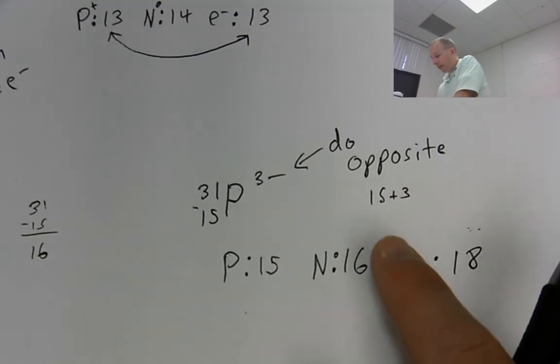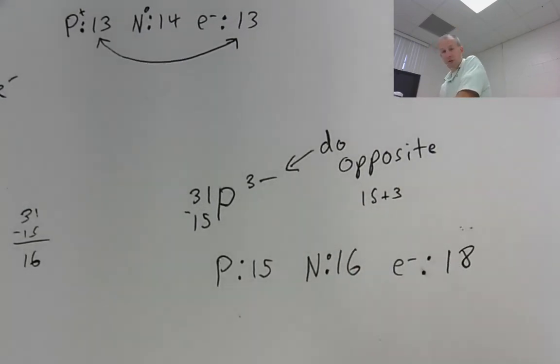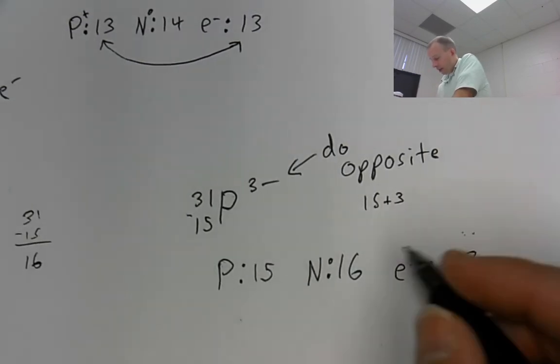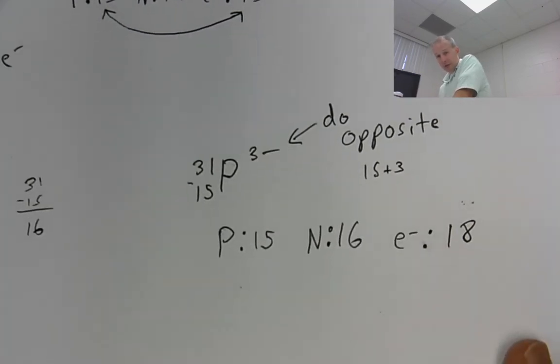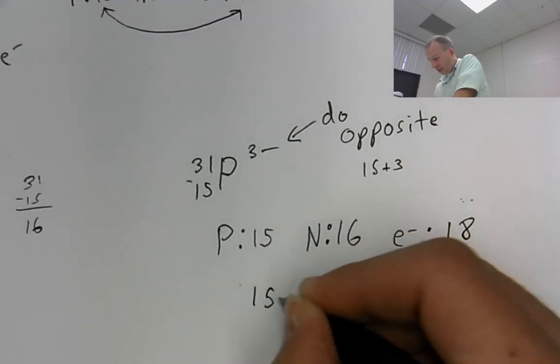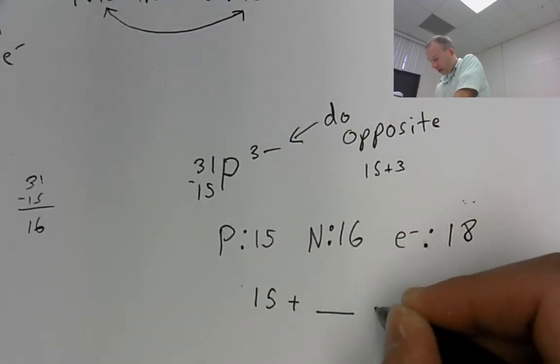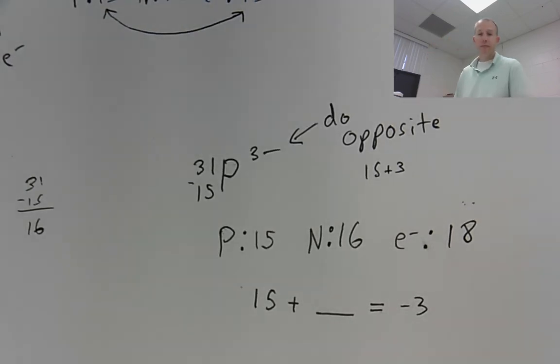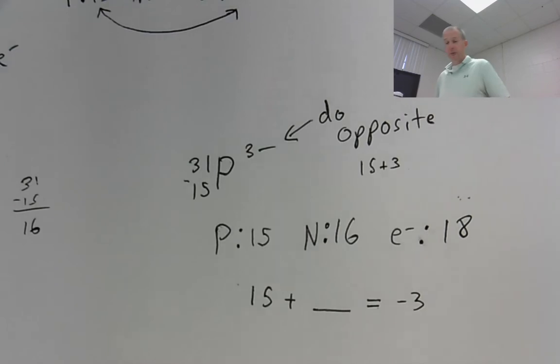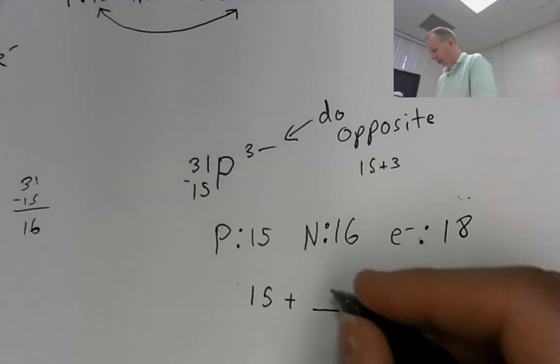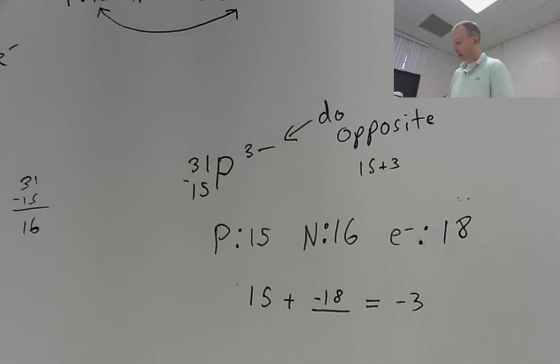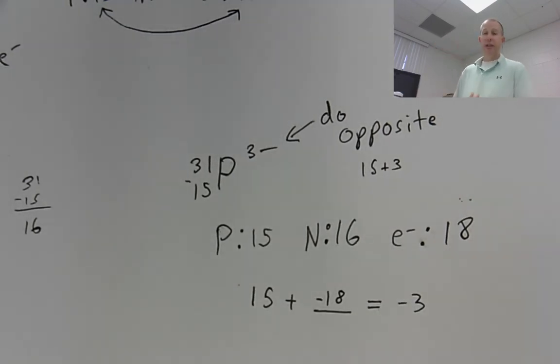That means you have 18 electrons. So the reason I did that is because, again, we need to have more electrons than protons. So if you think about it, it's like, okay, I've got, if you want to do it a more complex way, you can set up a math problem. You can say, okay, I have to have 15 plus blank equals negative 3. So 15 plus what equals negative 3? Well, the answer, the only thing it could be, is negative 18. So that's why you would have 18 electrons, with electrons being negative.